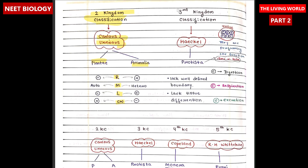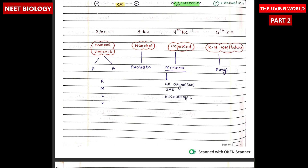The third kingdom classification was developed by Haeckel and it was about Protista. In Protista, a lack of a well-defined boundary is present along with lack of tissue differentiation. The fourth kingdom classification was proposed by Herbert Copeland. It divides living organisms into Monera, Protista, Plantae, and Animalia. All organisms of the fourth kingdom classification are microscopic.